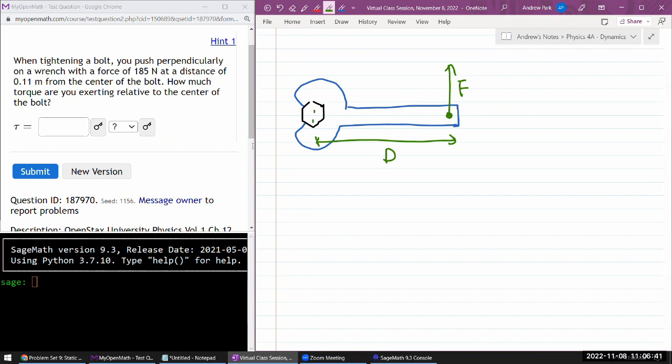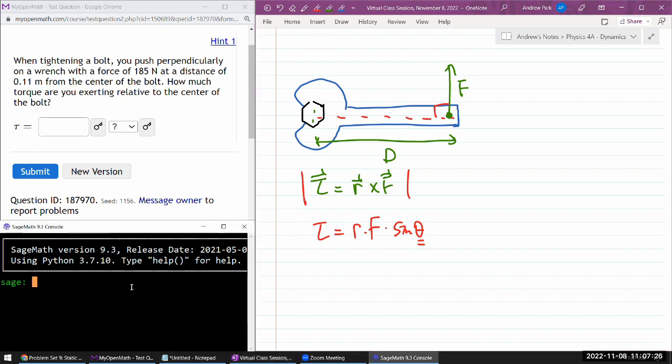How much torque are you exerting relative to the center of the bolt? The definition of torque is displacement cross product with F. Since it looks like they're just asking for the magnitude, we can just go with the absolute value version, which is magnitude of torque equals the magnitude of the displacement times magnitude of force times sine theta, where theta is the angle between the two vectors. Because they're saying perpendicularly, so this is 90 degrees. The answer is fairly simple. Displacement 0.11 meter times force 185 newtons.